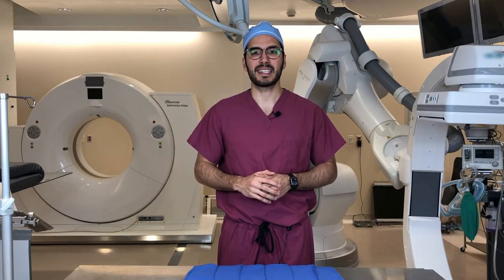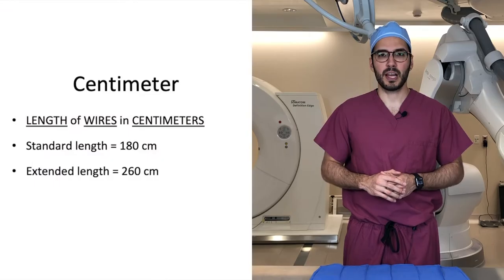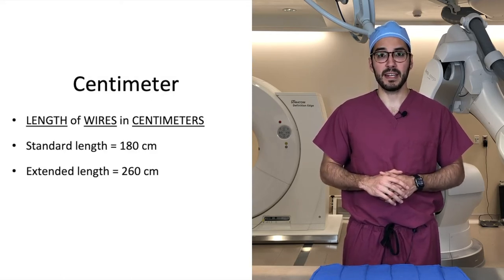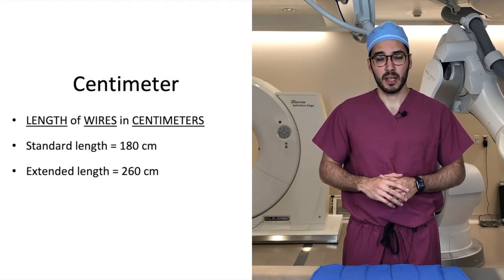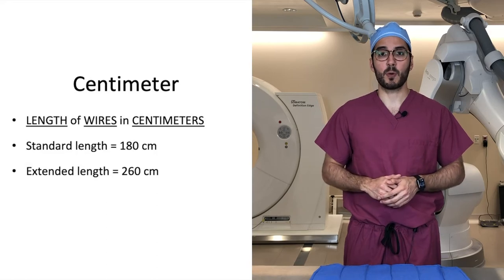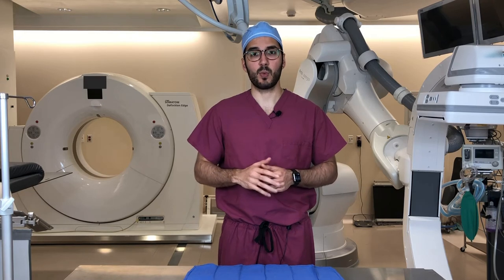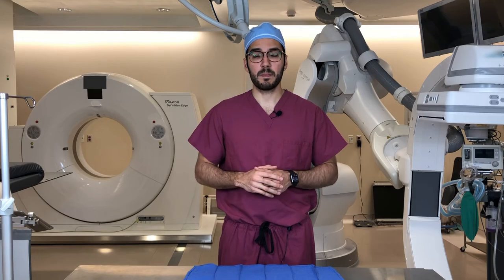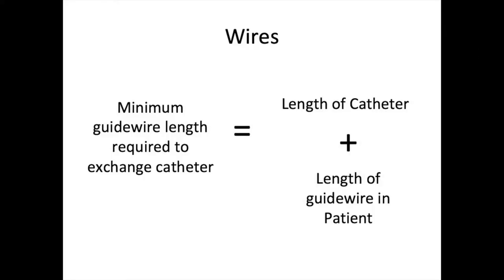The next unit of measure is centimeters. Centimeters describes the length of wires, and a standard length wire is 180 centimeters. Extended length wires are available at 260 centimeters, and they're used in situations where you need a little bit more purchase. A commonly asked question is: what is the minimum length wire required to exchange a certain catheter? The formula is: minimum length wire required to exchange catheter equals the length of the catheter plus the length of the wire that's in the patient.